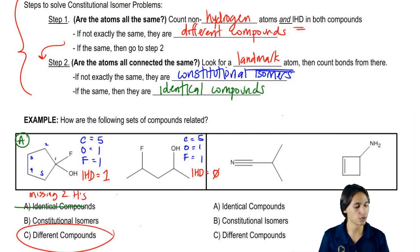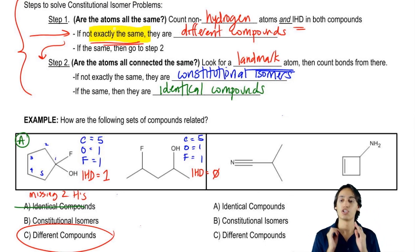Because I got stuck right up here - if not exactly the same, they are different compounds. That's exactly what happened. The IHDs were not the same, so I had different compounds. Does that make sense?